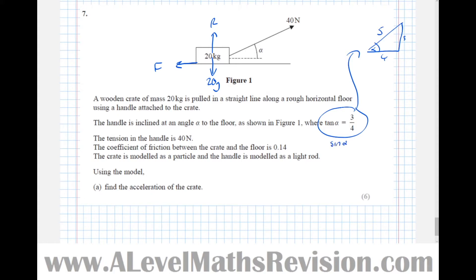So that means that sin alpha is going to be opposite over hypotenuse which is 3 fifths and cos alpha is going to be adjacent over hypotenuse which is 4 fifths. So there we've got that.